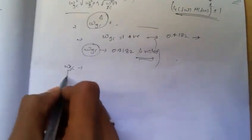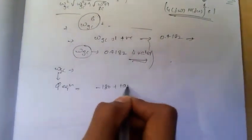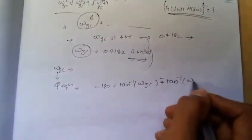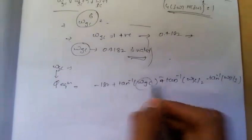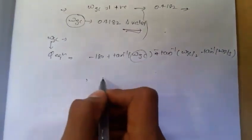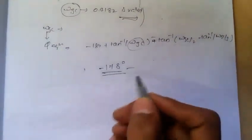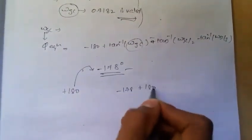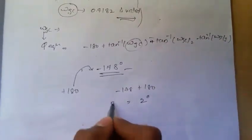Now we know Omega GC. Substitute the value of Omega GC in the phase equation. The phase equation is minus 180 plus tan inverse of Omega — substitute Omega GC there — minus tan inverse of Omega GC by 2, minus tan inverse of Omega GC by 3. If you substitute Omega GC in the phase equation, you get some value, let us assume it as minus 178 or so. And if you add plus 180 to this value — that is, minus 178 plus 180 — the corresponding value you get is the phase margin.